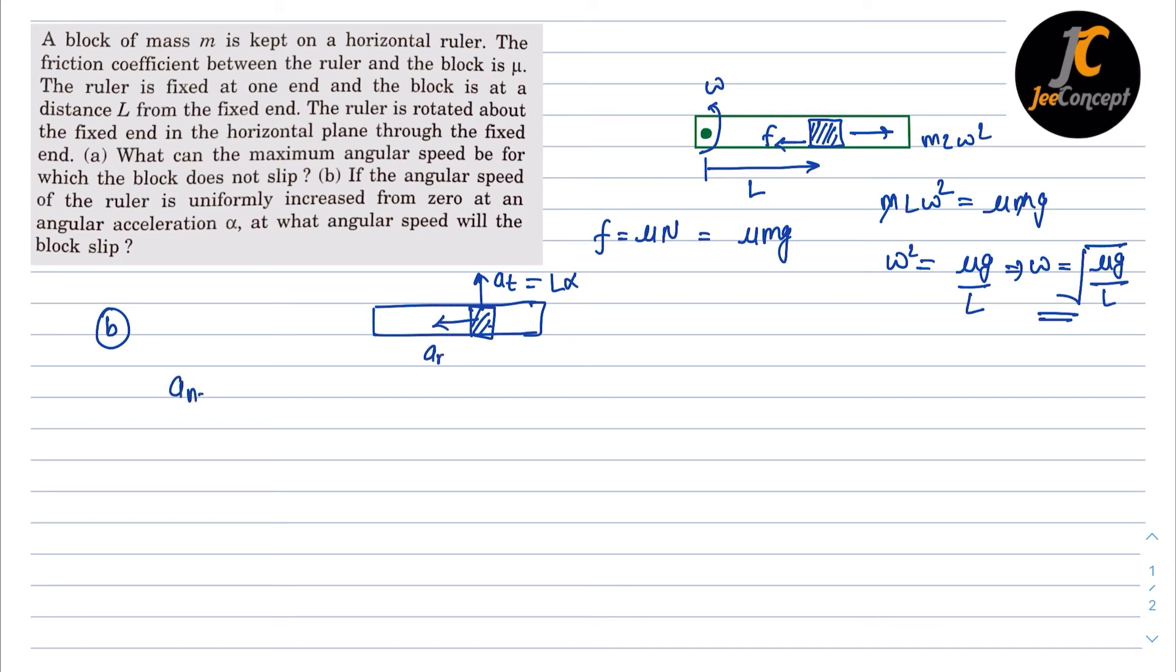So the net acceleration will be under root ar square plus at square. Now the value of radial acceleration is l omega square. Now putting the value of ar and at, a net will become under root l square omega power 4 plus l square alpha square.